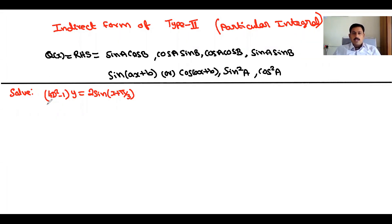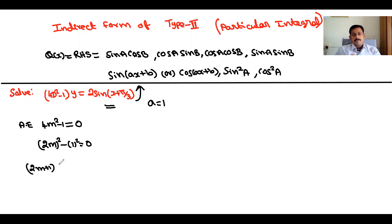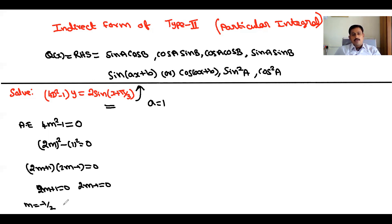Solve: (4D² − 1)y = 2 sin(x + π/3). Observing the RHS, it is in the form sin(Ax+B) where A = 1. To solve, first write the auxiliary equation by replacing D with m: 4m² − 1 = 0. This can be written as (2m)² − 1² = 0, which factors as (2m+1)(2m−1) = 0. So the roots are m = −1/2 and m = 1/2, which are real and different.